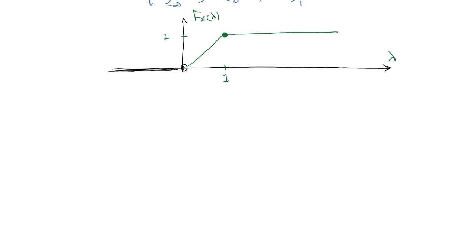Now let's check it. If it has all the characteristics: F_X of infinity equals one, F_X of minus infinity equals zero, you see that. And F_X is a non-decreasing function. You see that? This function is non-decreasing.